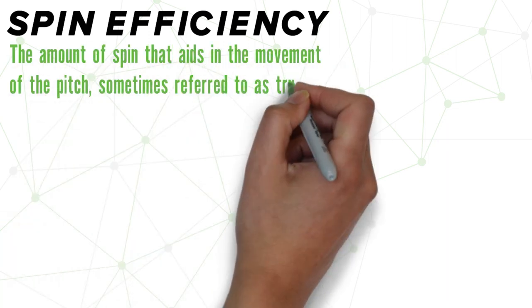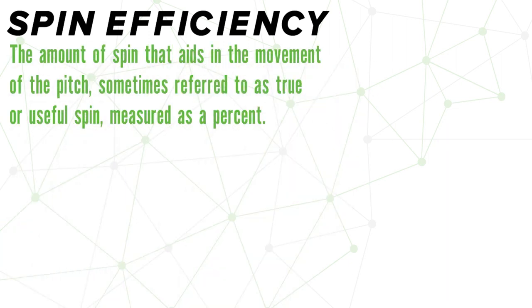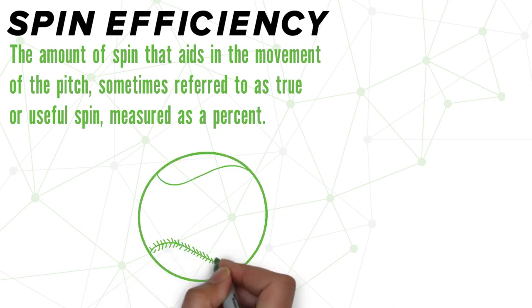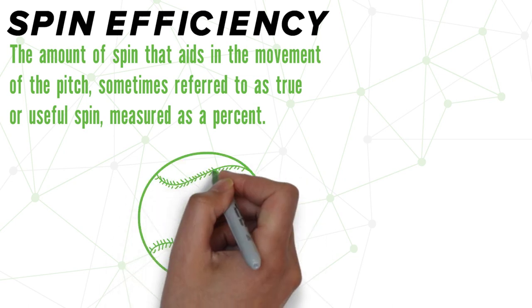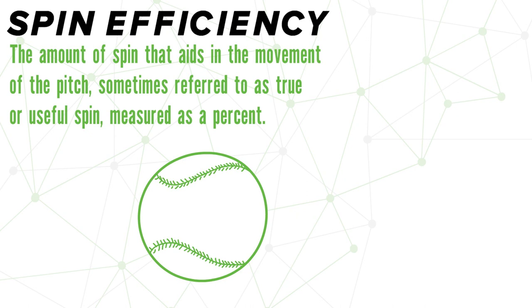Spin efficiency is the measure of the amount of spin that affects how much each pitch moves. Sometimes you'll hear this referred to as true spin or useful spin. Spin efficiency will always appear as a percentage.